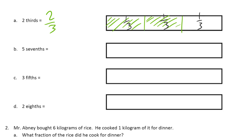Five-sevenths. Sevenths are kind of hard, but I'm going to guess that that's maybe a seventh there. Let's see — one, two, three, four, five, six. That's not too bad. They all look pretty close to about the same.